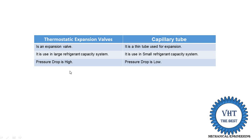When the pressure drop is high, we require more starting torque for the compressor motor, because high pressure drop means lower suction pressure, which demands more torque. With capillary tubes the pressure drop is low, so we require less starting torque for the compressor motor.